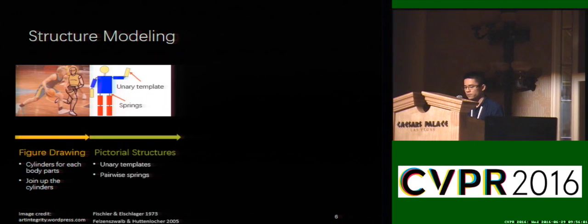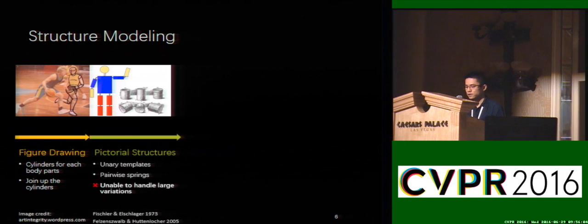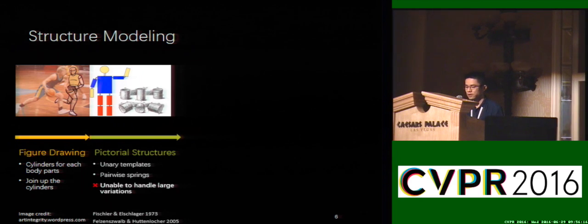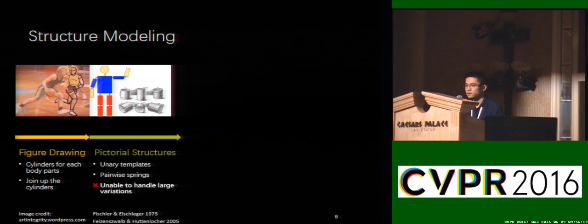A problem is that even projection of a simple cylinder into two-dimensional space results in many different appearances. So one has to explicitly evaluate many different possible in-plane and out-of-plane orientations to find a good match to a part template.